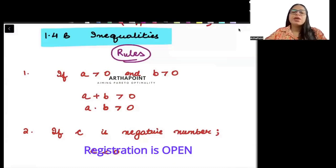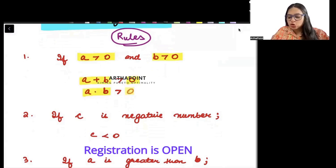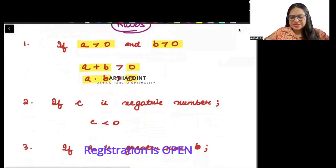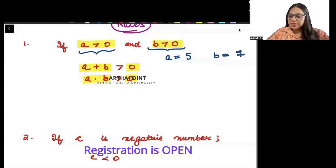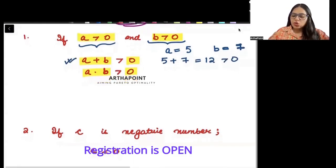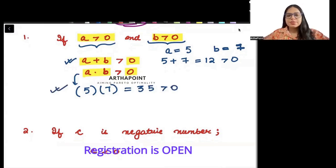The first rule: if a is greater than 0 and b is greater than 0, then a plus b will be greater than 0 and a into b will also be greater than 0. For example, take a = 5 and b = 7. Then a plus b = 12, which is greater than 0 — satisfied.